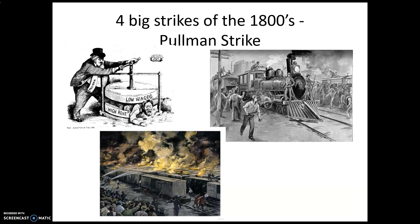The Pullman Strike involved the Pullman Railroad Car Company, which paid workers low wages while charging them high rent to live in company apartments. Workers went on strike and the railroads were again shut down. The government responded by placing American troops on the railroads to keep them running — siding clearly with big business. None of the four major strikes went in favor of the unions.